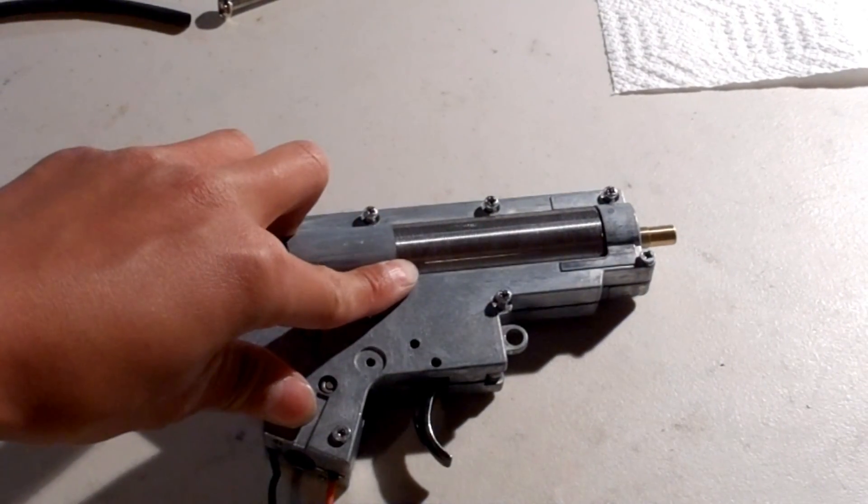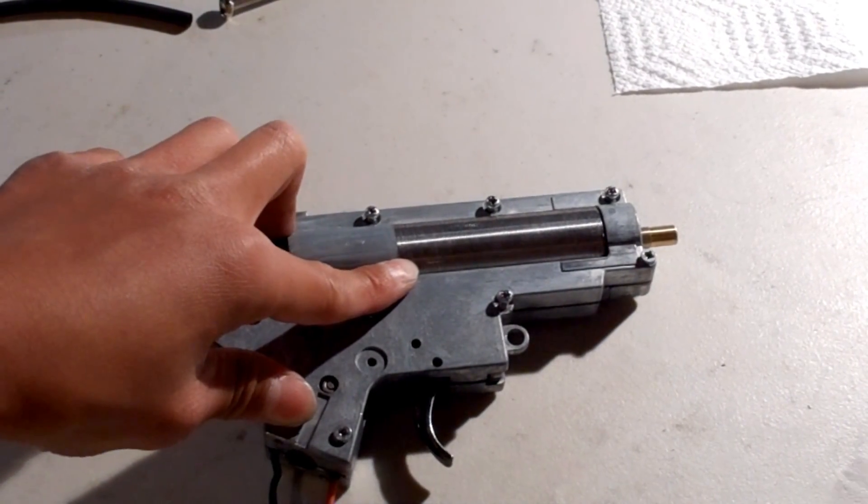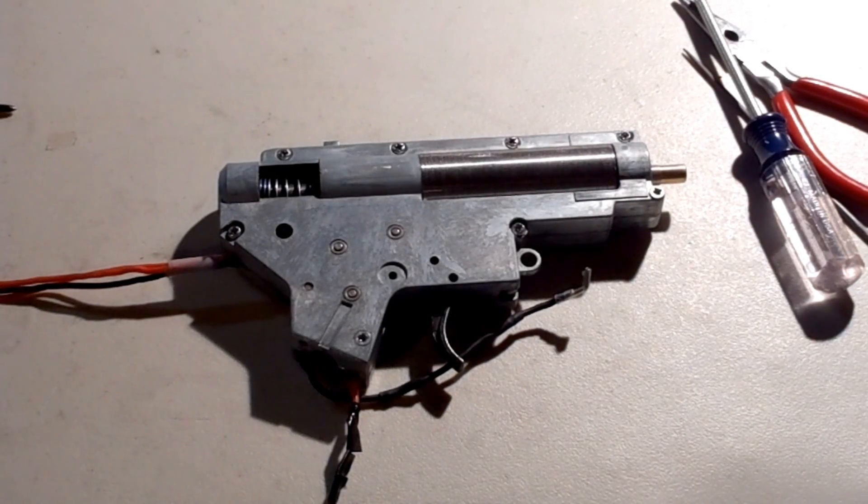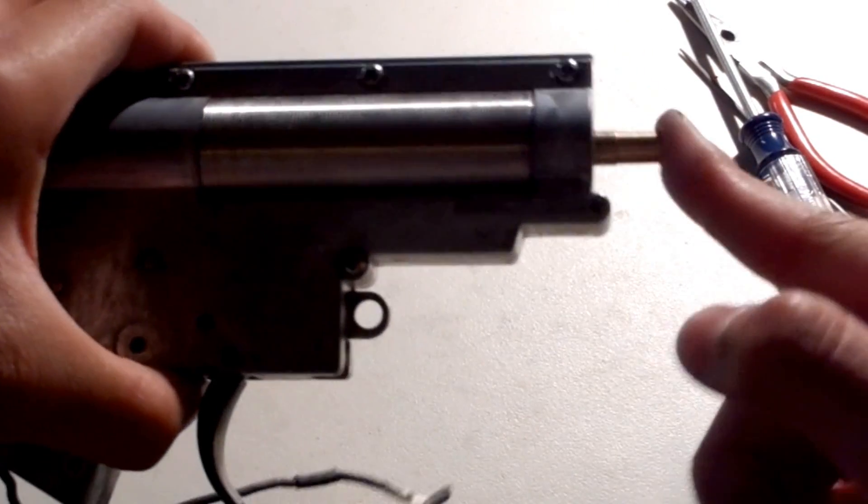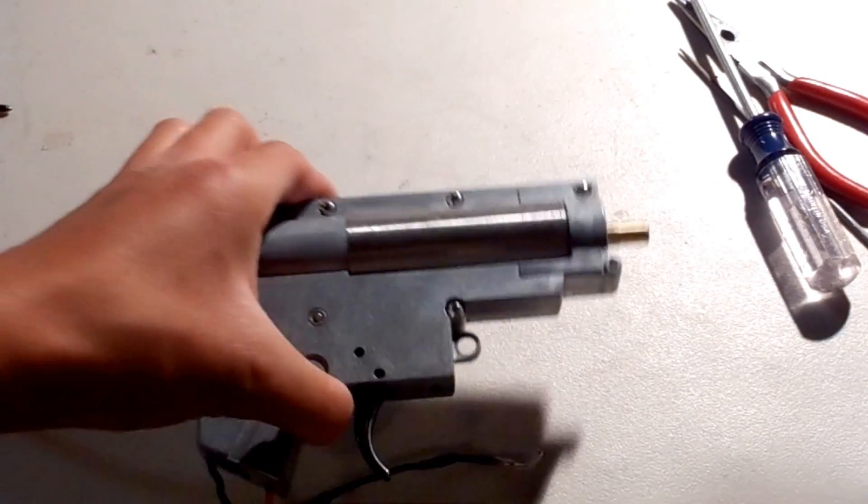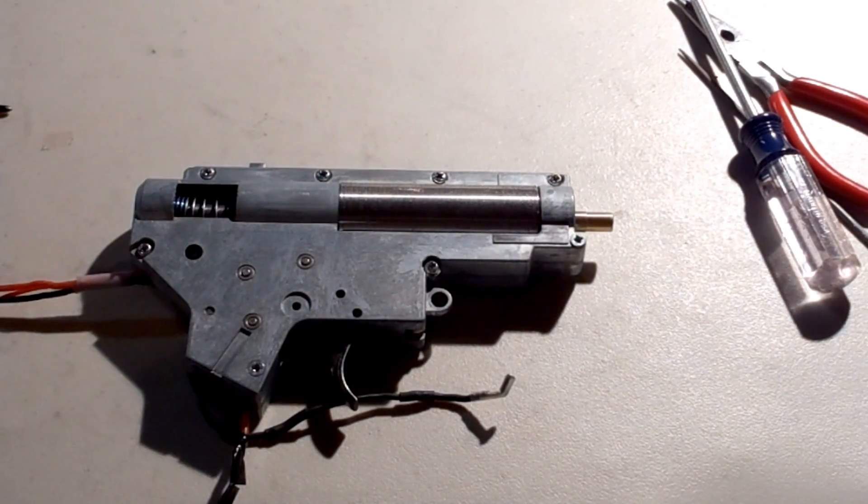And now, just tighten the screws. Now that your gearbox is complete, test if this air nozzle can be pushed back and forth. If it can, that's good. Now you can assemble this back into your gun.